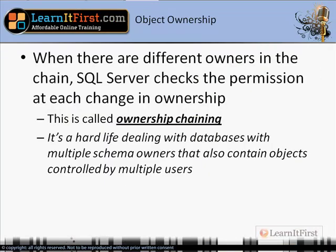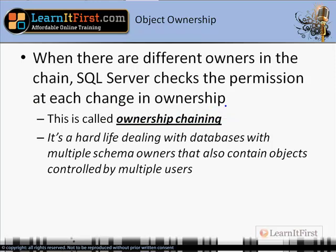Moving right along, let's get back into this idea of the ownership chain. We closed out the last video with an example that showed a chain where the same owner owned all the objects - that's normal, that's the way it is 98-99% of the time. However, when you do have different owners in that chain, SQL Server will check permissions at every change in ownership.